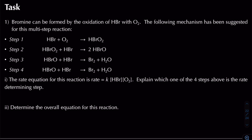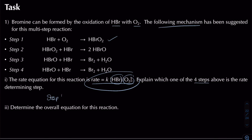Bromine can only be formed by the oxidation of HBr with O₂. A mechanism has been suggested for this multi-step reaction. The rate equation is: rate = k[HBr][O₂], and everything is order 1. To explain which of the four steps is the rate determining step: the reactants in our rate determining step must have one lot of HBr and one lot of O₂. That matches step 1, so step 1 is the slowest step — it is the rate determining step.